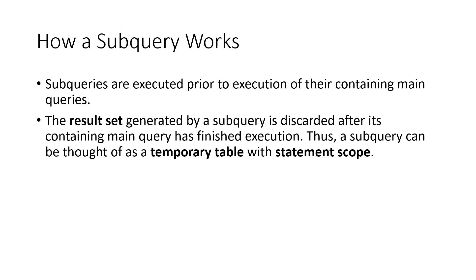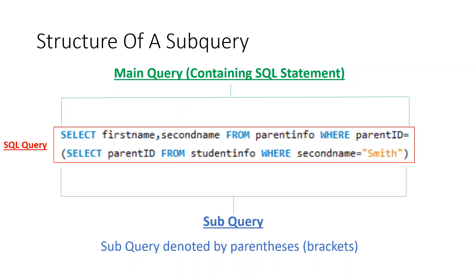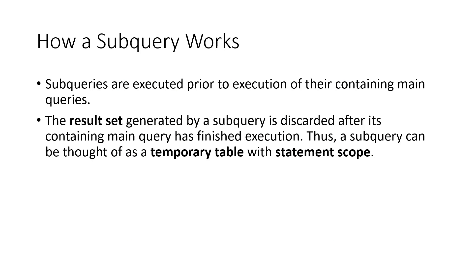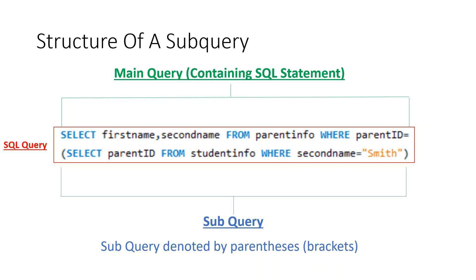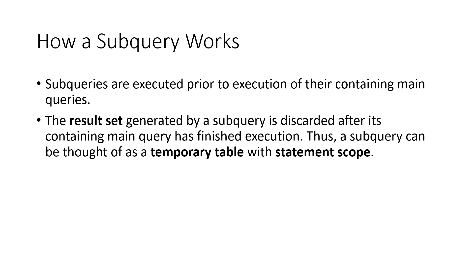How a subquery actually works: subqueries are executed prior to execution of their main queries. So SELECT parent_id FROM student_info WHERE student_name equals Smith will be executed first, and the resulting result set is then used by the main query. That result set is then passed into the main query so it can carry out SELECT first_name, second_name FROM parent_info WHERE parent_id equals the result from that subquery. The result set generated by the subquery is discarded after its containing main query has finished execution.